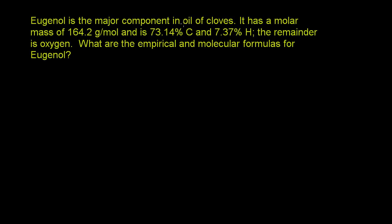Eugenol is a major component in oil of cloves. It has a molar mass of 164.2 grams per mole and is 73.14 percent carbon and 7.37 percent hydrogen. The remainder is oxygen. What are the empirical and molecular formulas for eugenol?